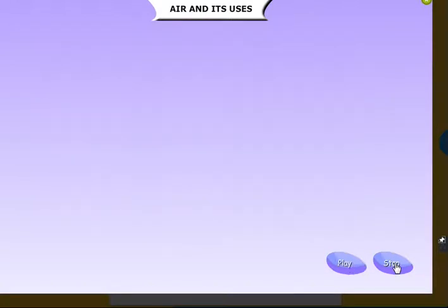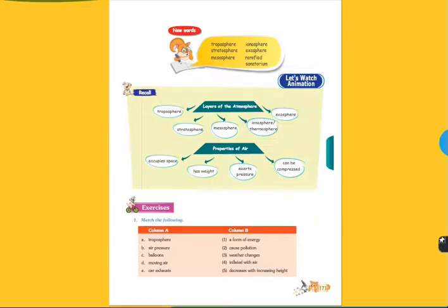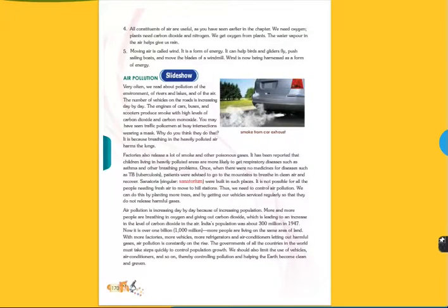So with this we have completed our chapter. We have learned in this chapter about air and its uses, the layers of the atmosphere, the composition of air, uses of oxygen and carbon dioxide, the properties of air, and about air pollution.